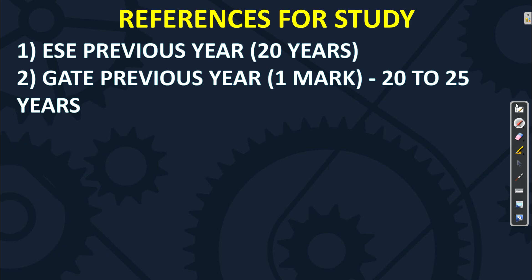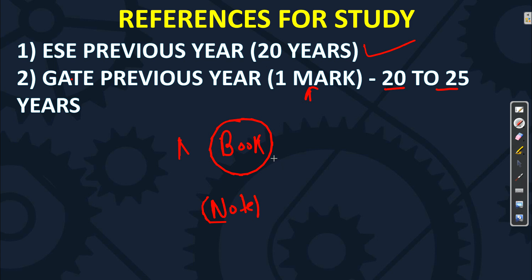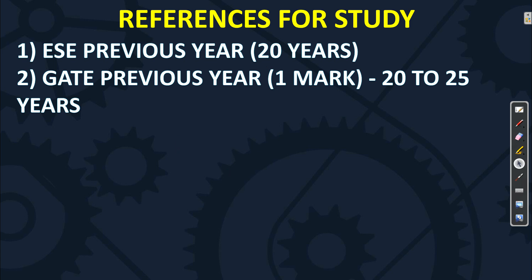For references in mechanical: first priority is ISRO/BARC previous year papers — last 20 years is enough. Second priority is GATE previous year papers, one-mark questions only, for 20 to 25 years depending on your branch. There is no particular book available covering all the syllabus content, so you need handwritten notes. Just Google 'EAC mechanical notes' and you will find them.